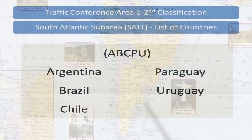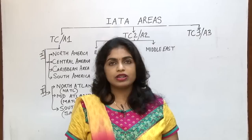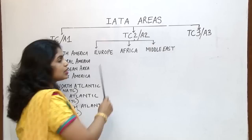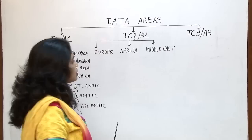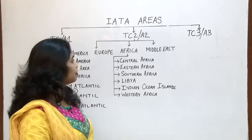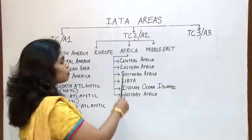Now let us check IATA area 2. IATA area 2 gets divided into more sub areas. Sub area number 1 would be Europe. Next it would be the continent of Africa and the Middle East. Europe will be all the countries which come under the European continent. Africa will have the same, and Middle East will be a part which comes under the Middle East sub-continent. Africa gets divided into more sub areas within IATA area 2.